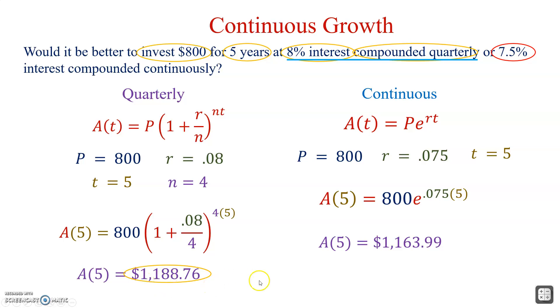In this case, this is the better deal. 8% interest compounded quarterly is the better of the two.